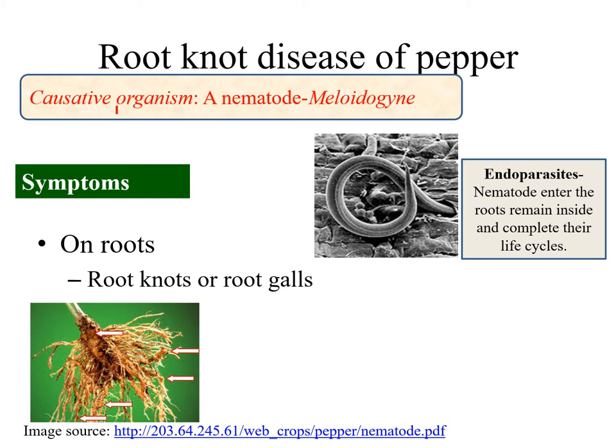Nematodes are minute organisms, also called eelworms, because they are eel-like in appearance, though they are quite distinct taxonomically. Nematodes are obligate endoparasites. They enter the roots and remain inside, completing their life cycle within the root itself.